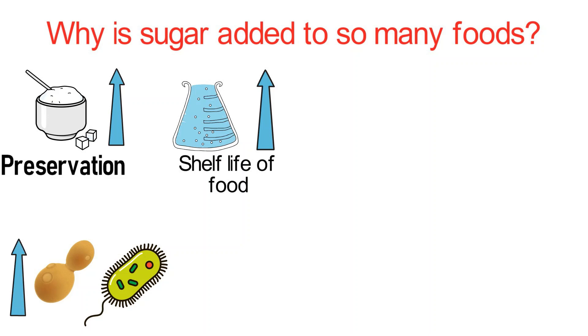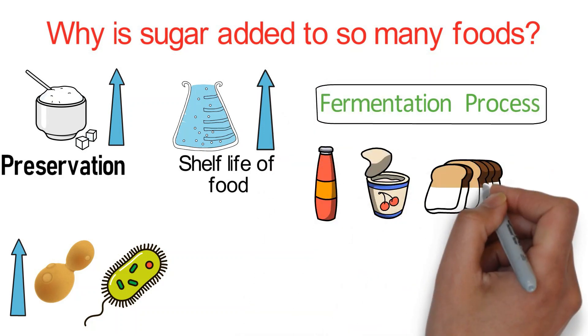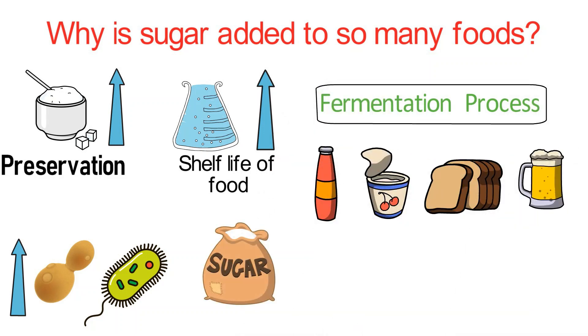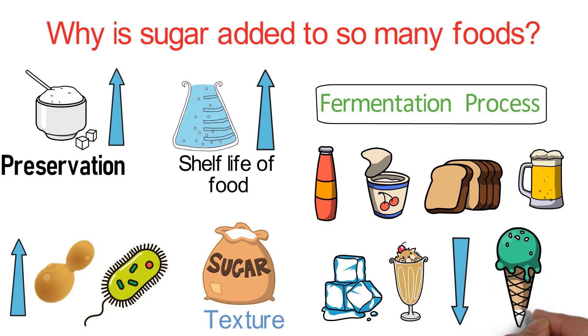Sugar is an important part of the fermentation process, and is used for this property in items like soy sauce, yogurt, bread, and beer. Sugar not only sweetens foods, but also changes their texture. For example, sugar affects the way ice crystals form in ice cream by causing the freezing point of the mixture to drop. This creates smaller ice crystals, giving frozen desserts a desirable, creamy quality.